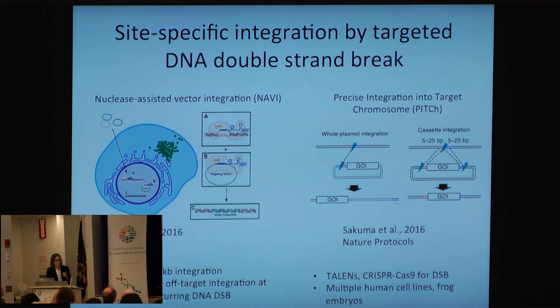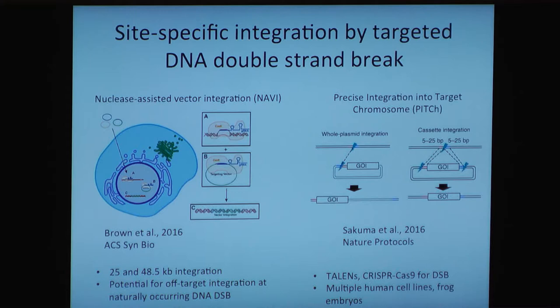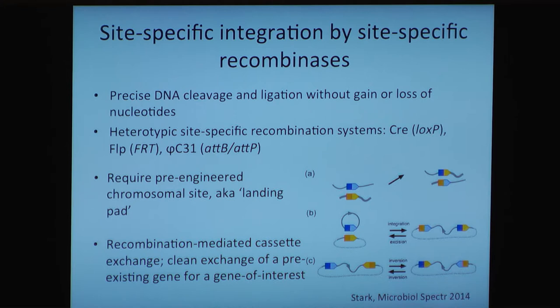Another really important approach is targeted delivery of DNA. Genomes can capture a linear DNA present in the nucleus, regardless of homology. There are two approaches shown here from two different groups: if your double-strand cut site exists in your vector as well as the genome, you deliver that circular DNA, and it's a relatively efficient process to deliver that entire vector into that cut site via a single double-strand break — either CRISPR or TALENs in these cases. Site-specific recombination is another key strategy: precise DNA cleavage and ligation without loss of nucleotides. There are a number of existing heterotypic site-specific recombination systems, all requiring a pre-existing landing pad engineered into the cell, often used for delivery of big DNA in recombination-mediated cassette exchange.